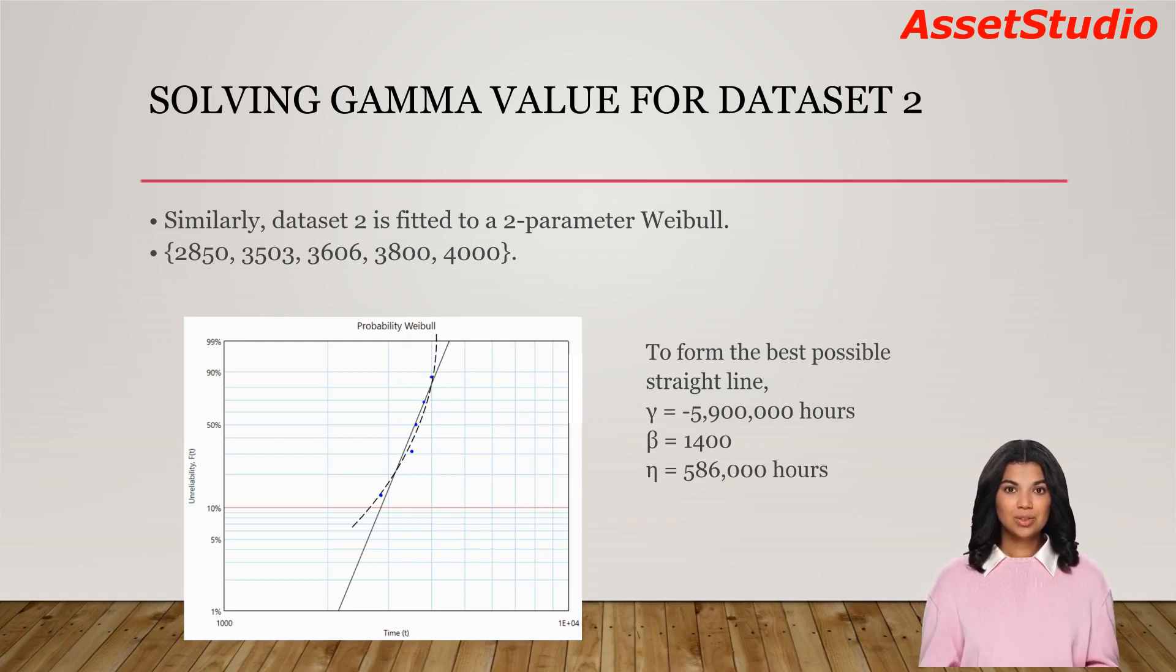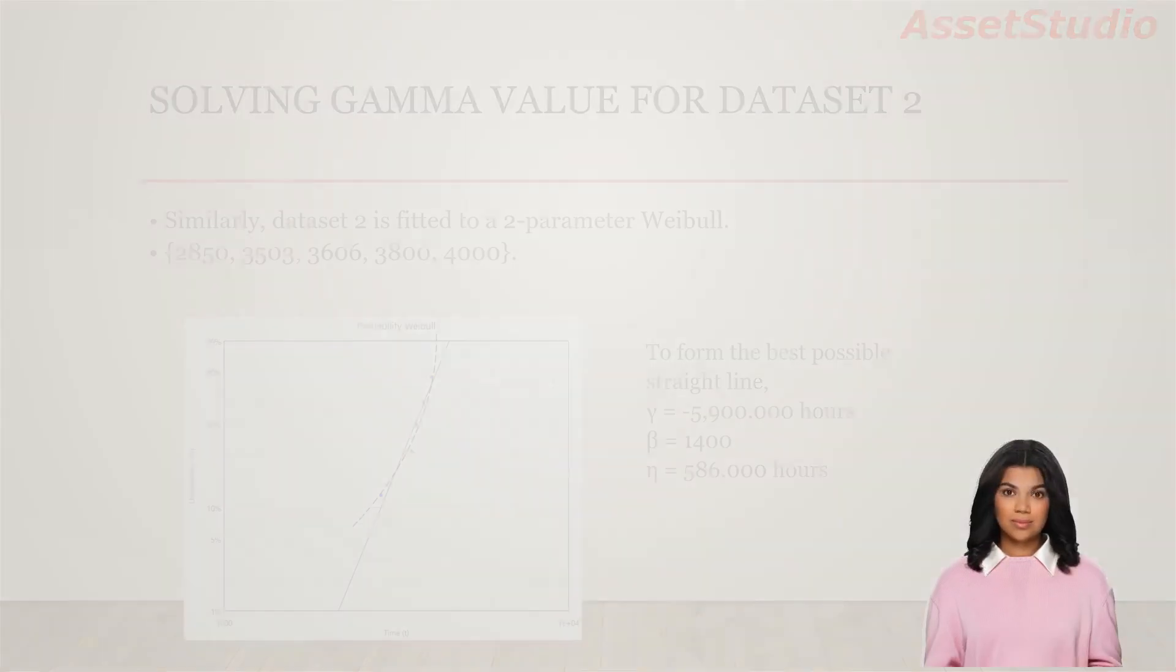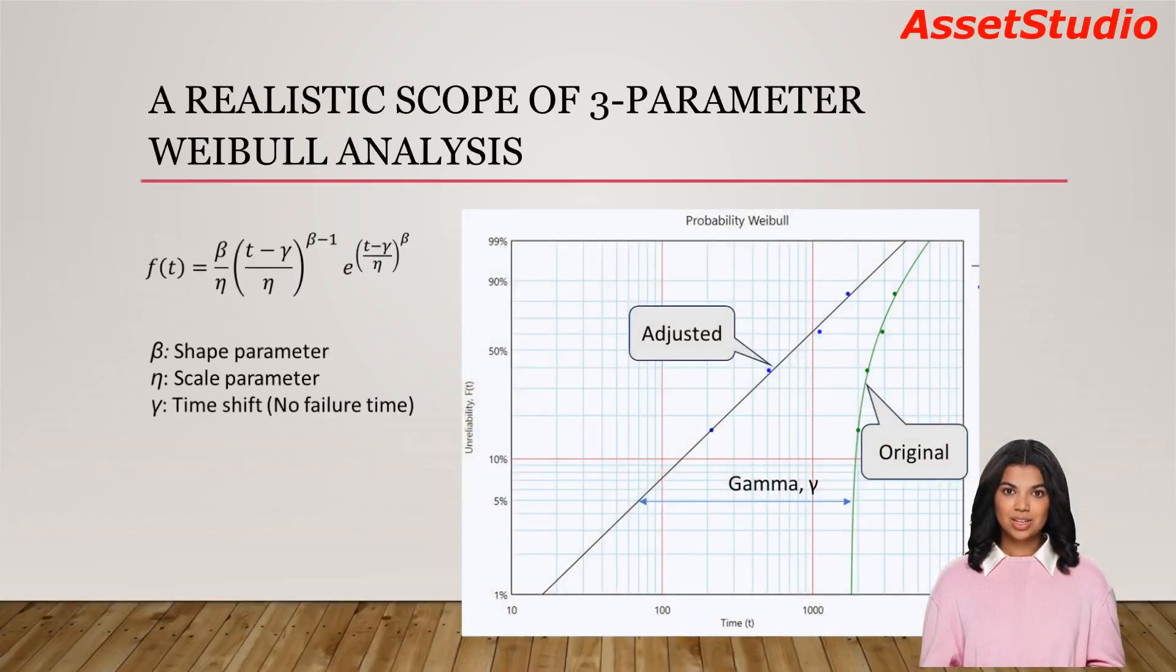As a side note, a large beta means that the failure rate increases very sharply when the item age is approaching eta value. Personally, I would switch to other distribution, like normal or log normal if the beta is greater than 20. These two datasets were generated using Monte Carlo simulation with 2-parameter Weibull. There was no gamma value, but we can always come up with a gamma by fitting the dataset to a 3-parameter Weibull.